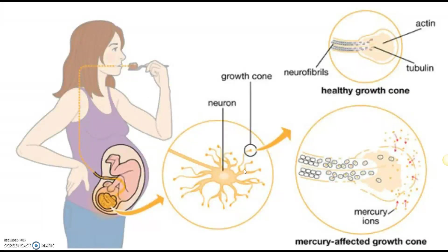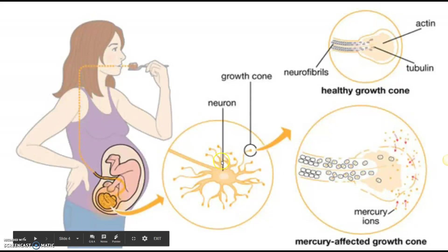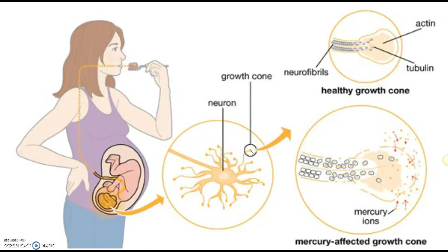Mercury is primarily a neurological defect mechanism — it breaks down neurological pathways. In the unborn baby, neurons developing inside the brain grow through the fetus's development, and the growth cones at the end are what give us many of our neurological abilities. In a healthy cone you have tubulin, actin, and neurofibrils working properly, but when mercury is present the mercury ions disrupt that development, causing neurological disorders in the developing baby.